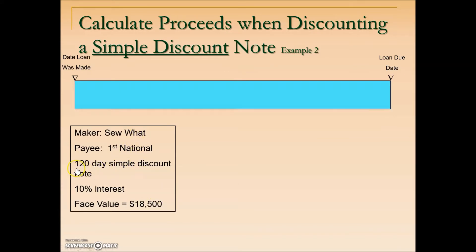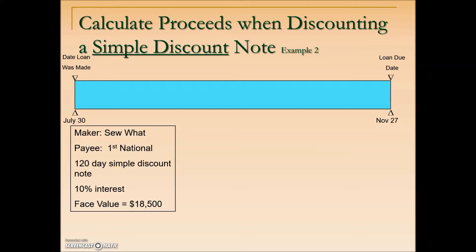In this next example, key here is that it is a simple discount note with a face value of $18,500. The loan started on July 30th, and 100 days later — calculated by adding 100 days to the day-of-year number for July 30th — the maturity date is November 27th. The payee, First National, decides on September 2nd that they no longer want to wait until the maturity date.